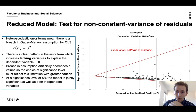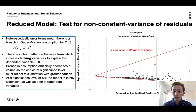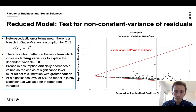Now we are going to have a look at the reduced model and test for homoscedastic error terms. We can see in the plot that there is clearly a pattern in the residuals, which indicates heteroscedastic error terms — a breach in the Gauss-Markov assumption for ordinary least squares regression. There are lacking variables to explain our dependent variable FDI. This breach in assumption artificially decreases p-values, so we need to be careful when evaluating the joint significance of our model. But at a significance level of 5%, the model is both jointly significant as well as the two independent variables in the reduced model.